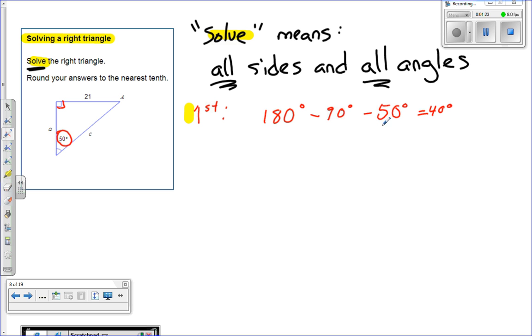All right, well, that's nice and easy. That means that the measure of angle A is actually going to be equal to 40 degrees. So right here is 40. That's just using that they all add up to 180. So that's a piece of cake.